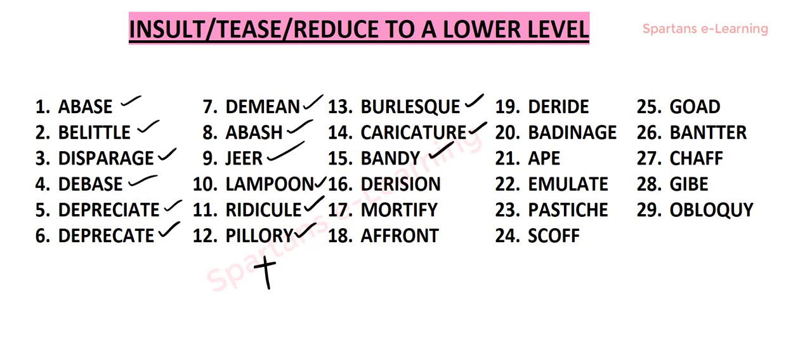Our next word is derision. Derision means to ridicule. Example: they greeted his proposal with derision and refused to consider it seriously, because they felt it was of lower quality. So derision means to ridicule.